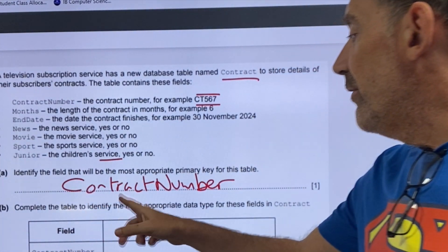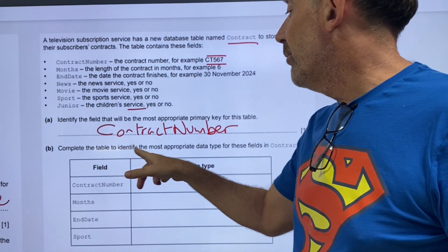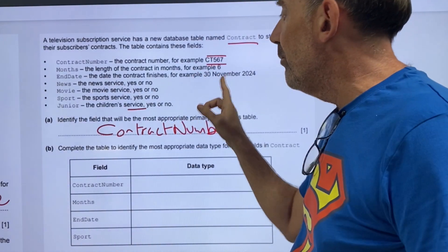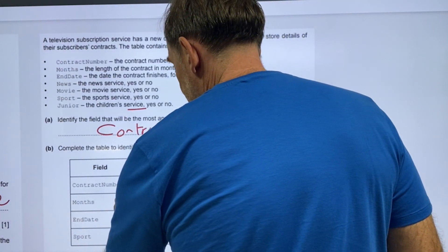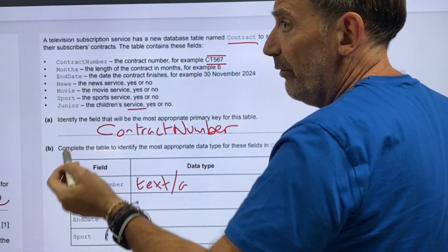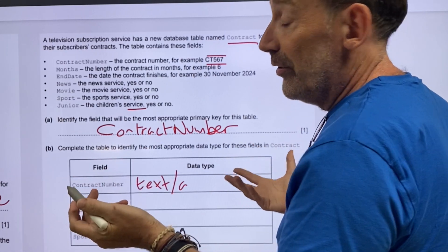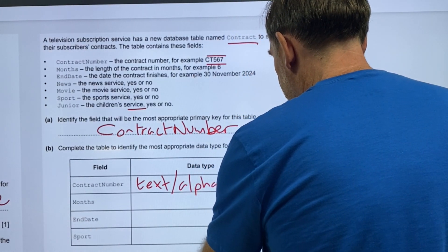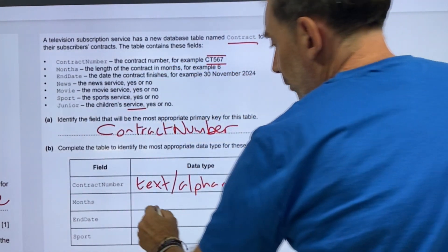Complete the table to identify the most appropriate data type for these fields in contract. So, contract number would be a text or an alphanumeric, because alphanumeric is alpha, which is generally letters, numeric numbers.